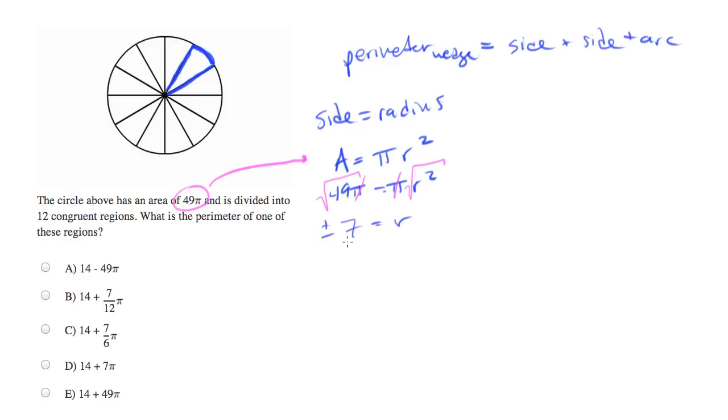It's actually plus or minus 7 equals r, but since we're dealing with a real shape, we want positive numbers.